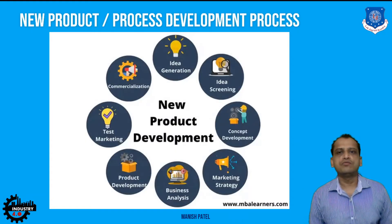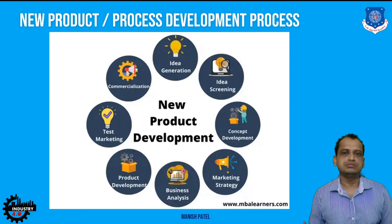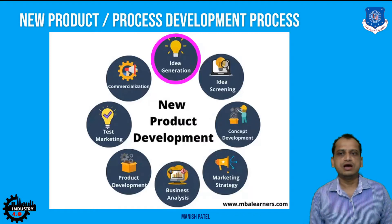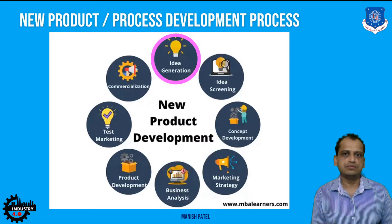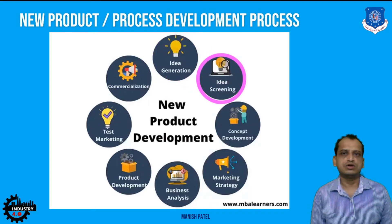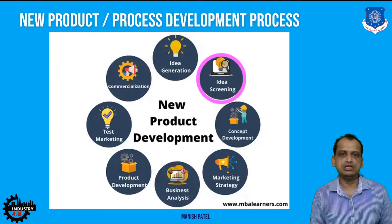Now let's look at the process for new product development — this process is also covered in the subject product design and development (PDD). Starting with idea generation: the company comes up with thousands of ideas. Out of those ideas, they screen them — whatever the feasible ones, they keep; whatever are not feasible, they remove. They screen those ideas and convert the viable ones into concepts.